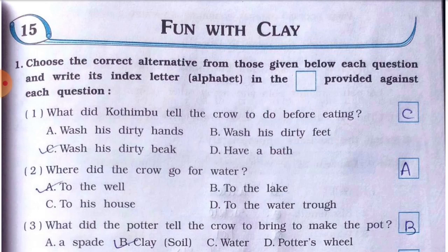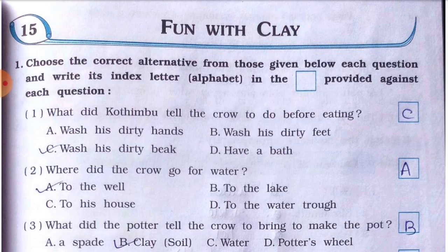Number 1: What did Kothim Bhut tell the crow to do before eating? Options are: A) wash his dirty hands, B) wash his dirty feet, or C) wash his dirty beak. The answer is C — wash his dirty beak. Kothim Bhut told the crow to wash its dirty beak.